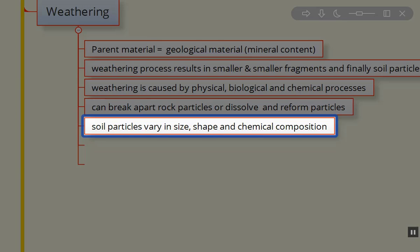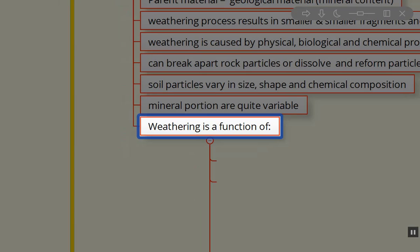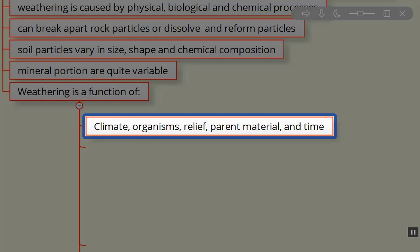Each soil sample can be quite different. Even on your piece of property, the soil constituents, the mother or the parent material being broken down into its various sizes is going to have different characteristics on different sections of your property. The mineral portion is therefore also quite variable. The weathering is a function of climate, organisms, the relief, parent material and time.